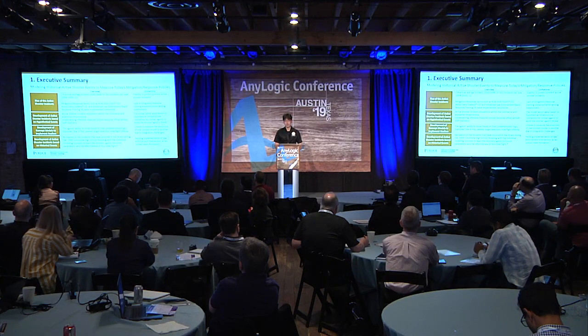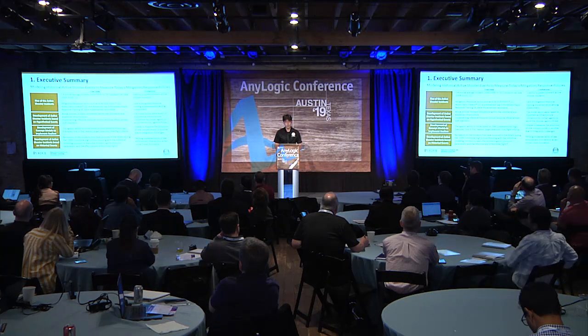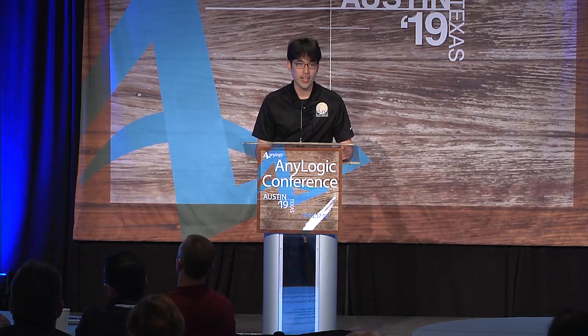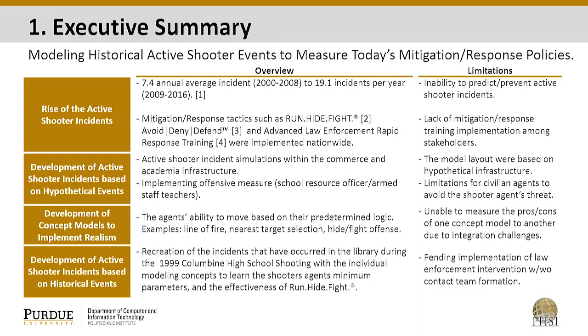In the beginning, our models were primarily focused on a couple of agents in a hypothetical environment that does not exist. We found a limitation in this research method and decided to come up with a model that replicates active shooter incidents that have occurred in the past, so that we could validate it and implement new policies to test the effectiveness of unarmed individual policies. During this phase, we were able to develop several proof-of-concept models, which were later implemented into the Columbine model.